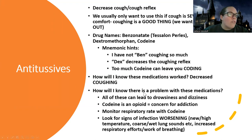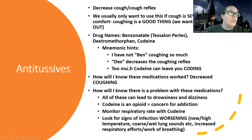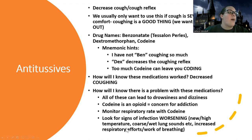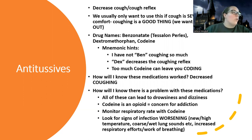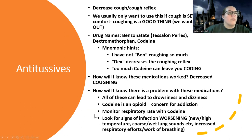How do we know these medications work? We want decreased coughing as our goal. A concern with these medications, like with expectorants, is they can cause drowsiness and dizziness — the double D's. Codeine specifically is an opioid, so there is a concern for addiction, and we also have to monitor the respiratory rate just like we would with morphine. We also want to look for signs that the infection is not worsening — new high temperature, wet lung sounds, increased respiratory effort, increased work of breathing, decreased oxygen saturation. The patient should be coughing less but also still getting better from their infection.